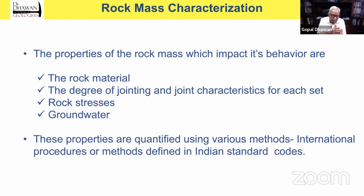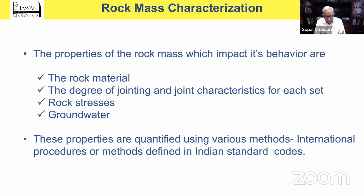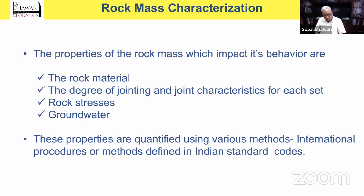The other two parameters — rock stress and groundwater — are the external parameters. The same sort of rock material having the same set of jointing may have different behavior under different conditions, and may behave differently on other sides of the rock if the rock stresses are not constant. If the groundwater regime changes, then the same rock will be different under different external conditions. So these four conditions — rock material, jointing, rock stress, and groundwater — are the key to the rock mass characterization program.